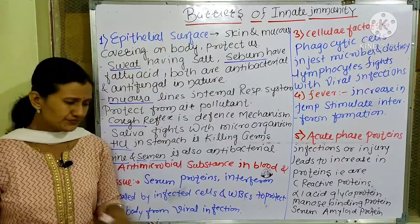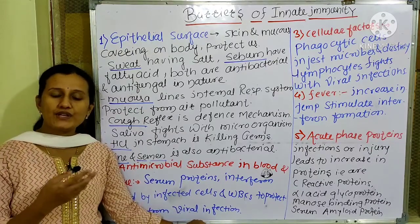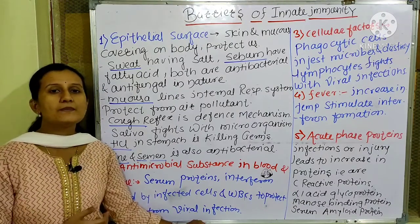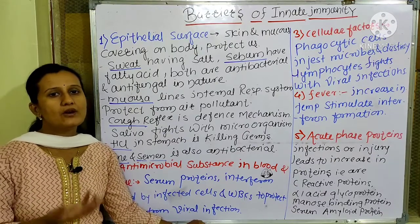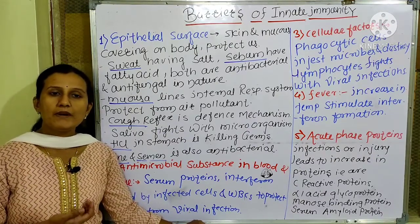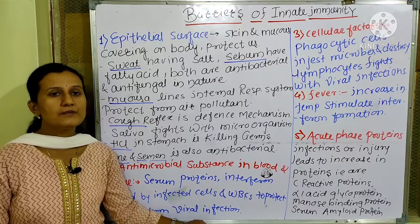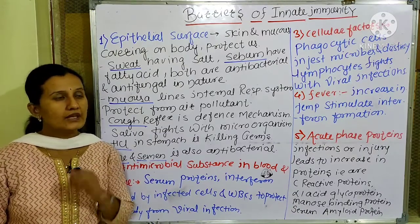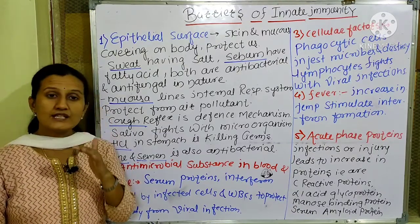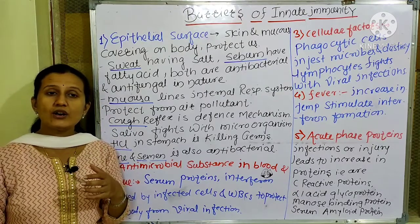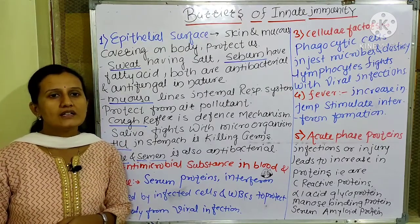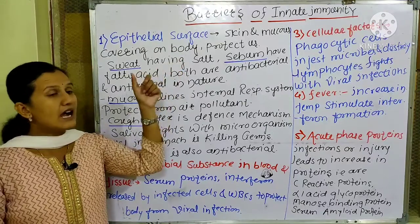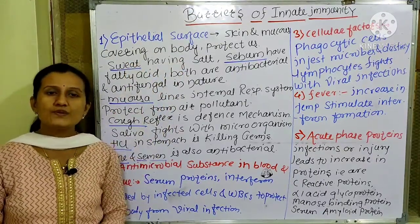Human beings have four types of tissue: epithelial tissue, connective tissue, muscular tissue, and nervous tissue. Epithelial tissue has simple epithelium and complex epithelium (compound epithelium). Simple epithelium is a single-layered surface present above the skin and in the internal linings of any organ. That epithelial surface includes the skin and the mucus covering on the body, which is protecting us.